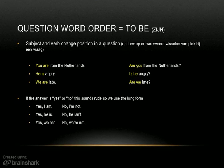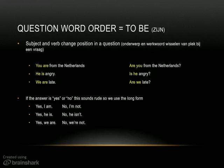Quite simply, in a sentence that has the verb to be in it, the subject and the verb change position. You can see a few examples below. You are from the Netherlands — are you from the Netherlands, etc. If the answer to one of these questions is yes or no, just saying yes or no sounds quite rude in English.